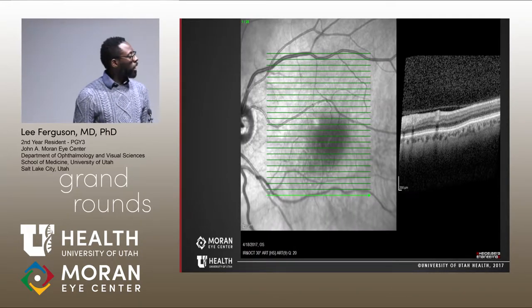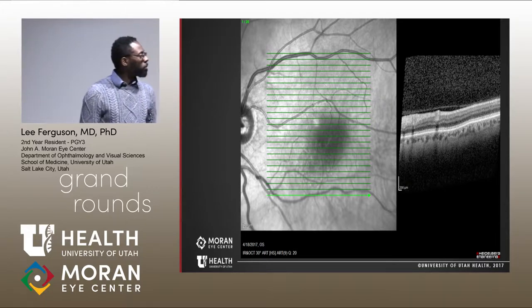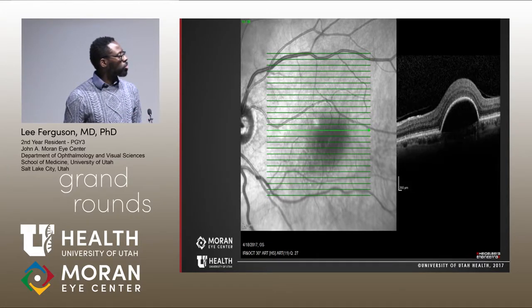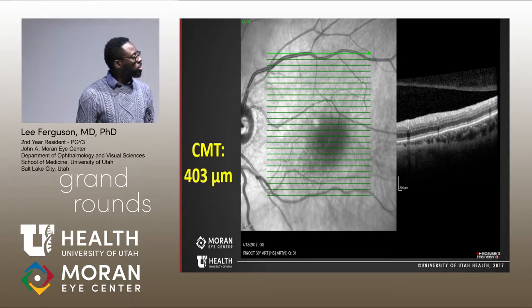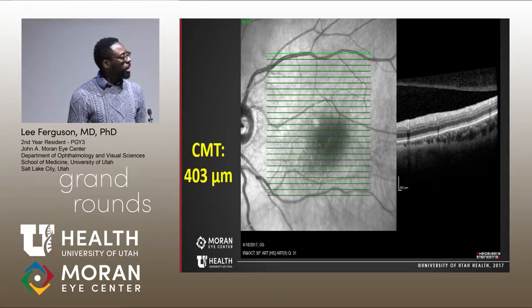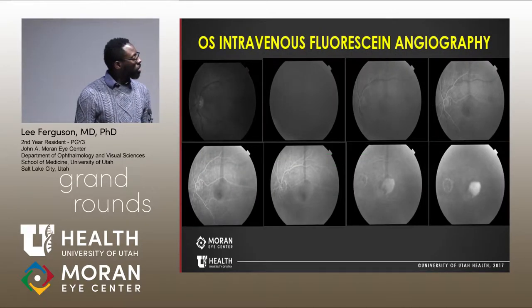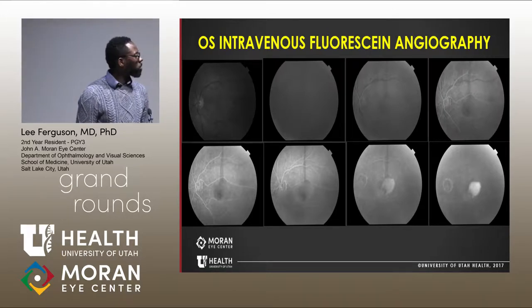On OCT of his right eye, it's pretty much unremarkable except for an ERM. With his left eye, based on the infrared en face view, you can see this central foveal hyper-hyporeflectance. Going through the OCT, what you notice is that he has this serous PED, and the central macular thickness was about 403 micrometers.